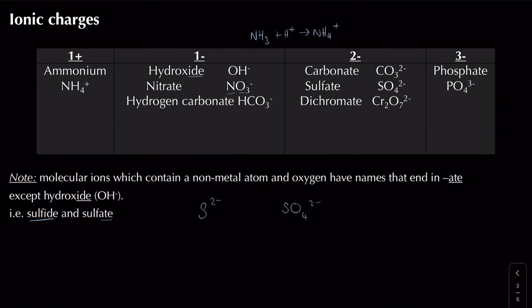Another example: phosphide versus phosphate. Phosphorus is in group 5, so it gains three electrons, giving P3 minus - that's phosphide. Phosphate ends in '-ate', so it contains phosphorus and oxygen: PO4 3 minus. The same concept applies everywhere. The only exception is hydroxide, which ends in '-ide' but still contains oxygen - it's OH minus.